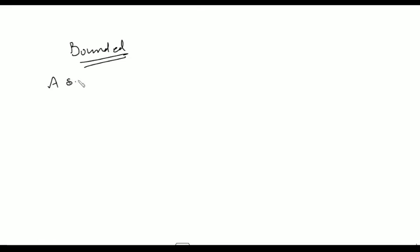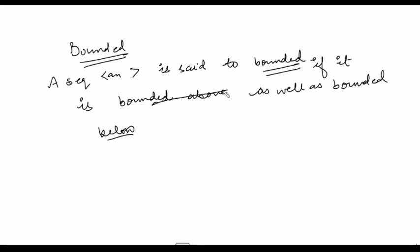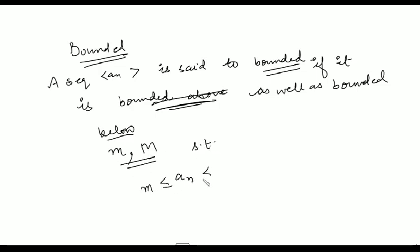The next is the definition of a bounded sequence. A sequence a_n is said to be bounded if it is bounded above as well as bounded below. In mathematical notation, there exist numbers small m and capital M such that small m ≤ a_n ≤ capital M for every n. So your sequence is bounded below by small m and bounded above by capital M, and we say the sequence is bounded.